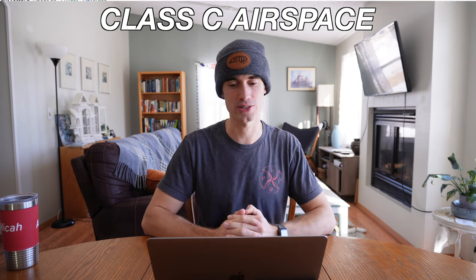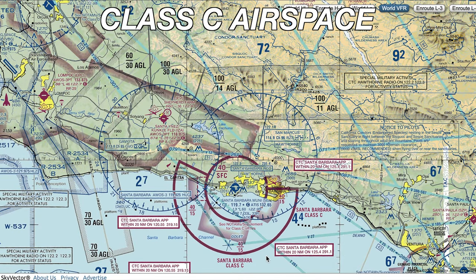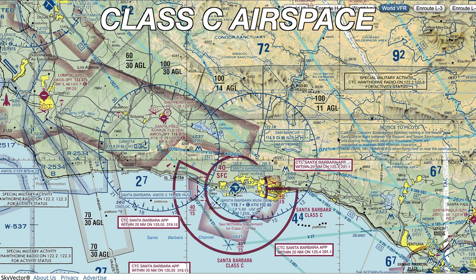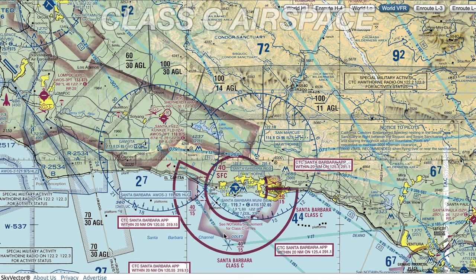Looking at the class C over Santa Barbara Municipal in California on SkyVector, we see the central core extending from the surface to 4,000 feet, and the next layer — really only covering the coastal side — has a floor of 1,500 feet, extending again to 4,000 feet AGL. Digging into why this airspace takes this shape, not too far inland there is a wildlife protection area for nesting condors, so Santa Barbara likely has air traffic routed inbound and outbound from the water.